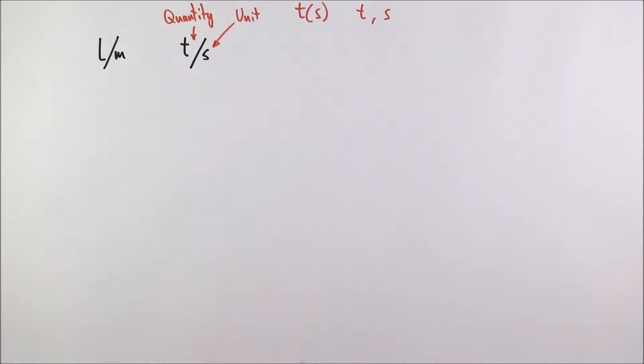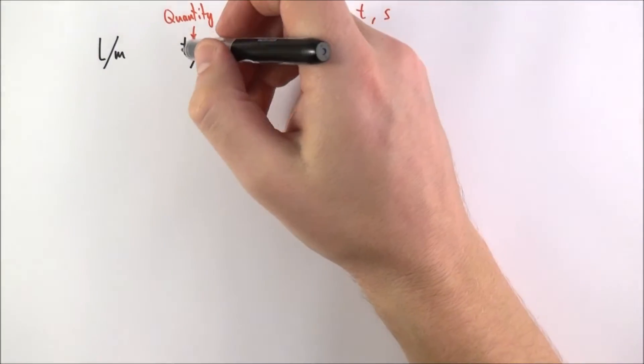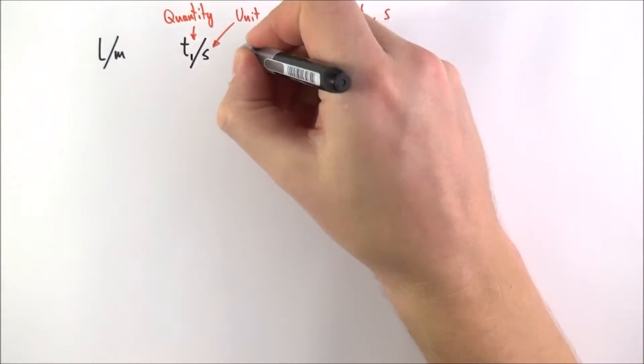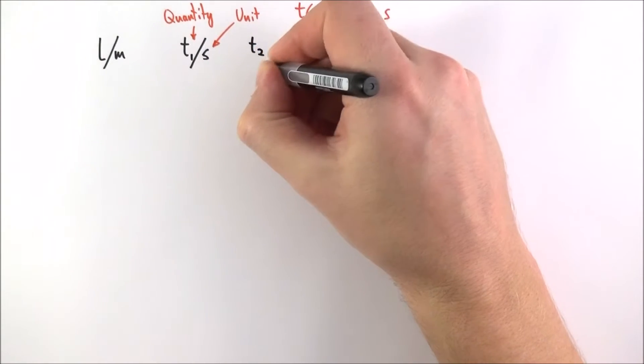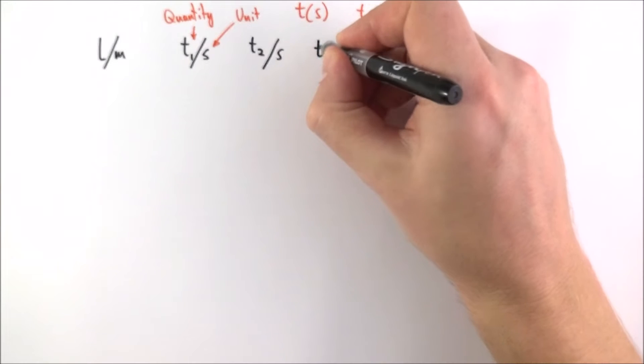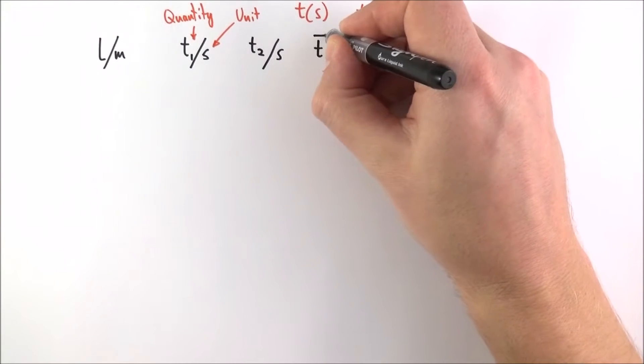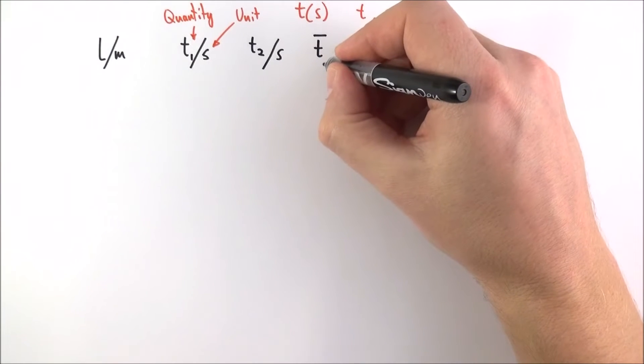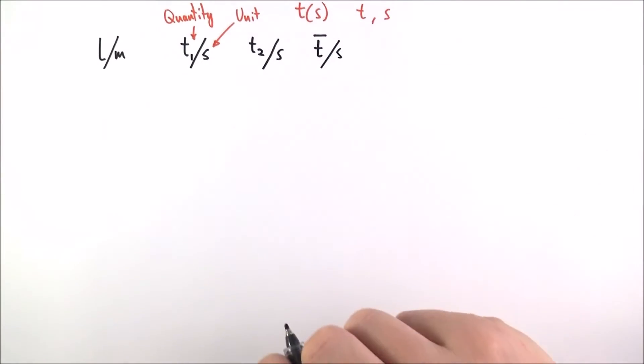Now something else we might need is maybe repeated values. So rather than having t in just one value we might have t1 and t2 also measured in seconds. We might then take maybe the average of these two numbers. So I'm going to put a bar on top to show that's my mean value and again I also have my quantity and my unit.